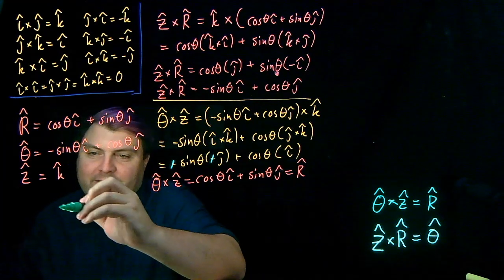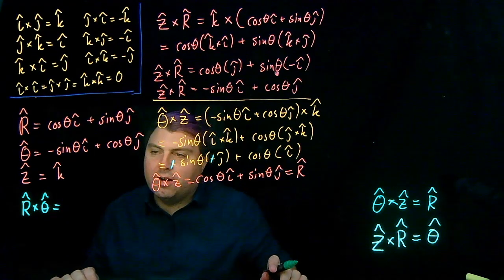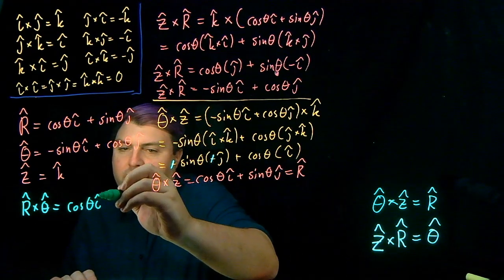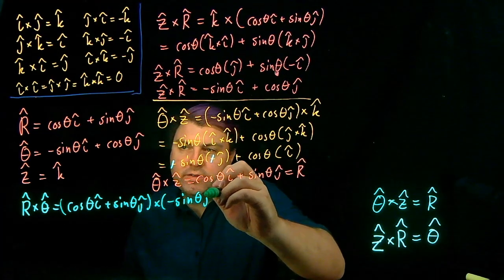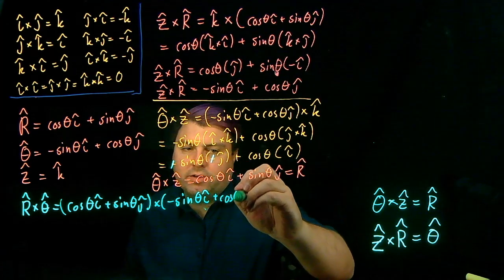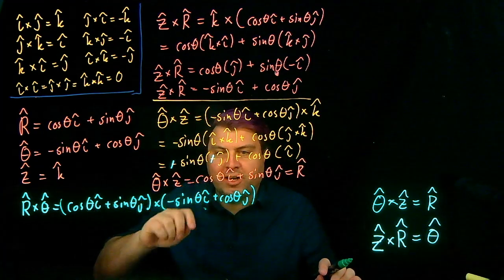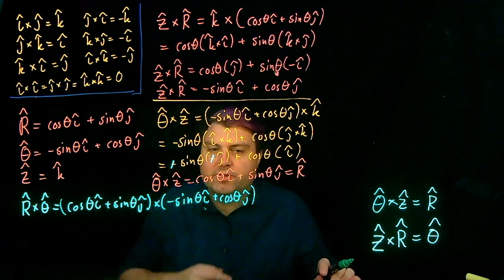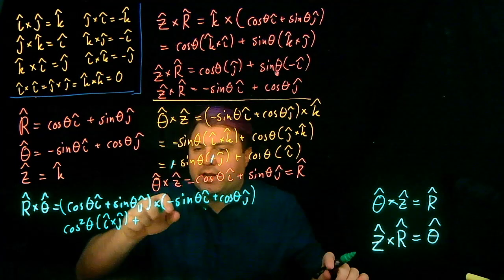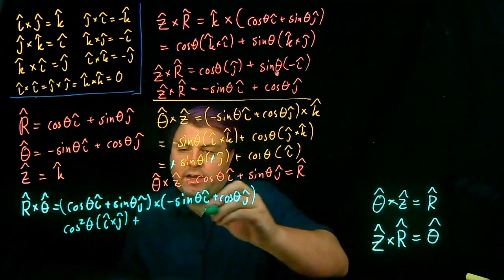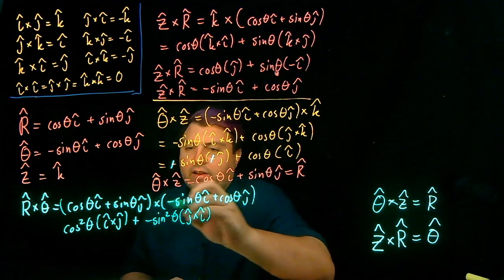Now for the toughest one: R̂ × θ̂. We expand: (cosθ î + sinθ ĵ) × (−sinθ î + cosθ ĵ). The î × î and ĵ × ĵ terms are zero, so we only do the cross terms: cosθ · cosθ (î × ĵ), which gives cos²θ (î × ĵ), and sinθ · (−sinθ)(ĵ × î), giving −sin²θ (ĵ × î).